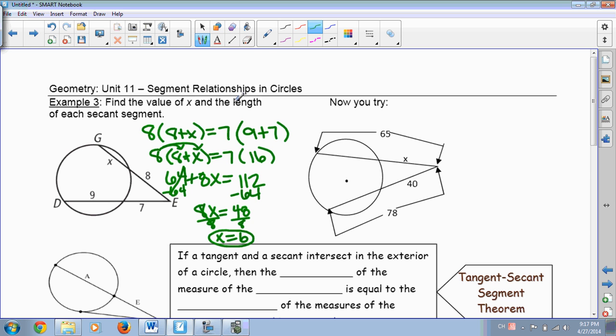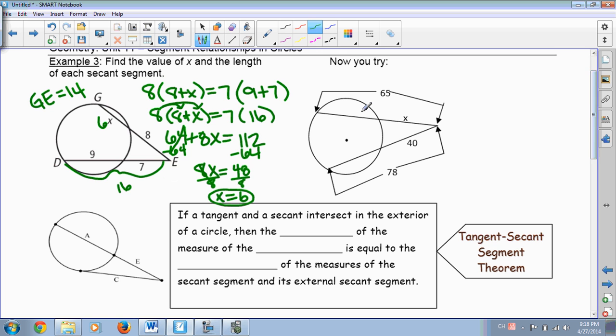So it says find the value of X and the length of each secant segment. Okay, well we know this segment here is 16. 9 plus 7 is 16. So if X were 6, then 6 plus 8 would be 14. So G to E is 14. Very good. Okay, we're going to save the You Try This for class tomorrow.